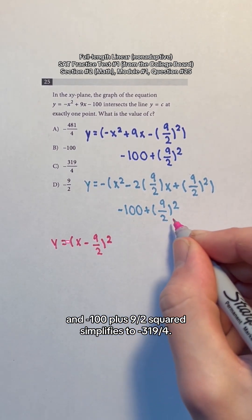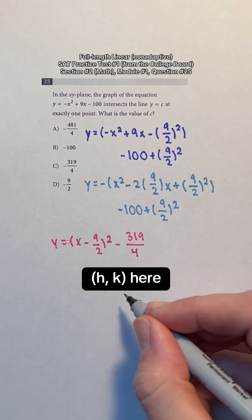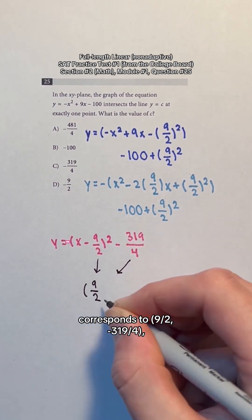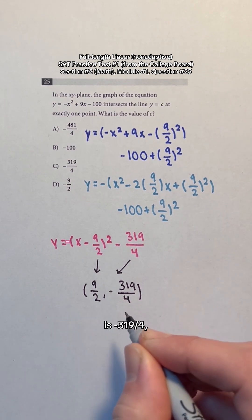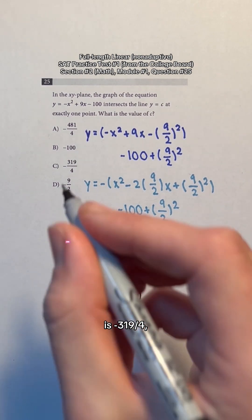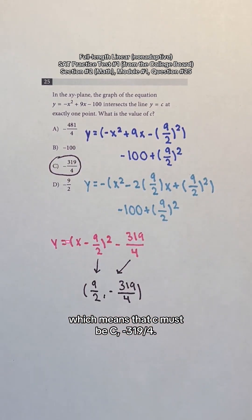And negative 100 plus 9 halves squared simplifies to negative 319 over 4. hk here corresponds to 9 halves, negative 319 over 4, so the y value of the vertex of the parabola is negative 319 over 4, which means that c must be negative 319 over 4.